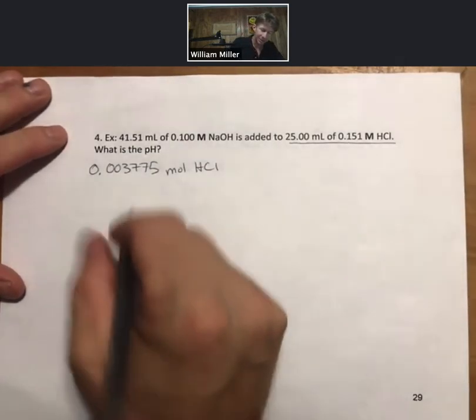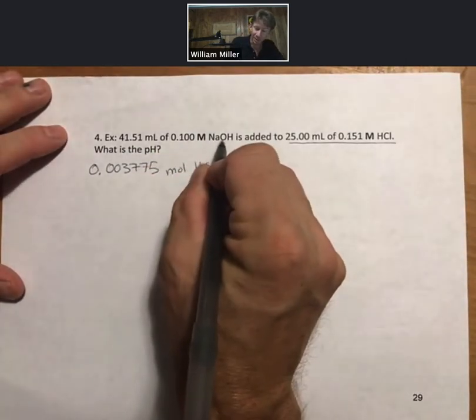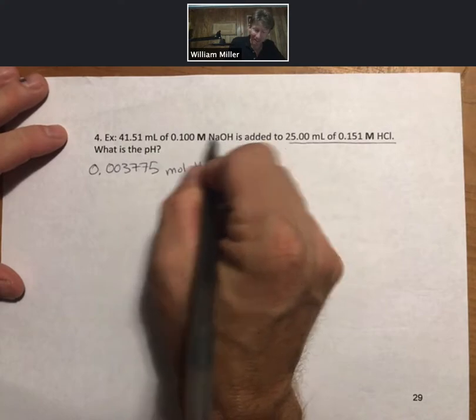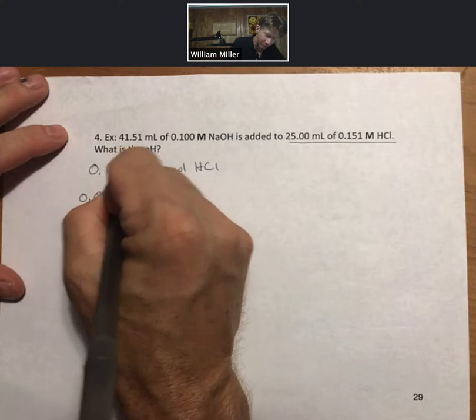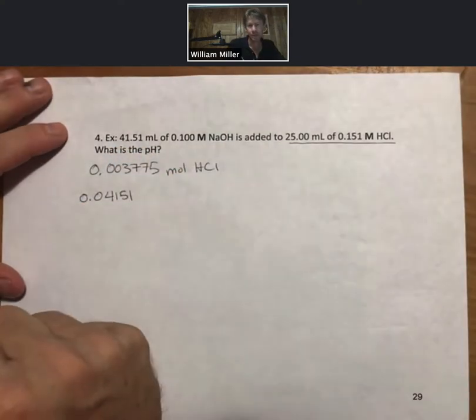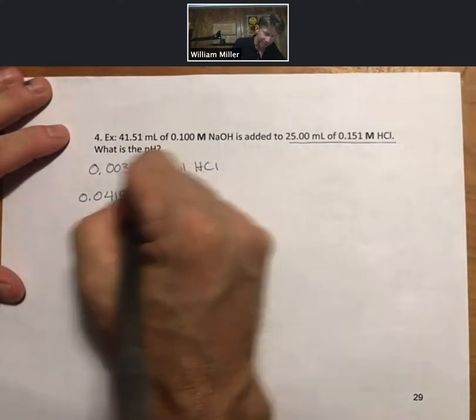Now the milliliters of sodium hydroxide have changed. Now we have 0.04151 liters of the sodium hydroxide solution.